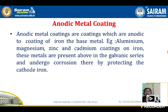Examples of anodic metals used for coating iron include aluminum, magnesium, zinc, and cadmium. All of these are present above iron in the electrochemical series, so coating iron with any of these is called an anodic metal coating.